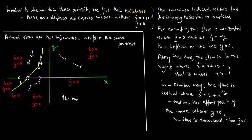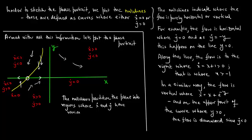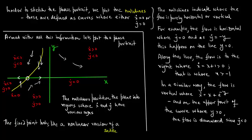The fixed point partitions the plane into regions where x_dot and y_dot have various signs. The fixed point actually looks like a nonlinear version of a saddle point.